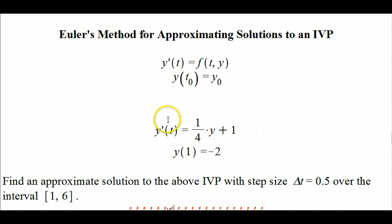For instance, we might focus on this example for the rest of this video. We have the derivative of your function is 1 fourth times the function plus 1, and the value of your function is negative 2 when t is equal to 1.